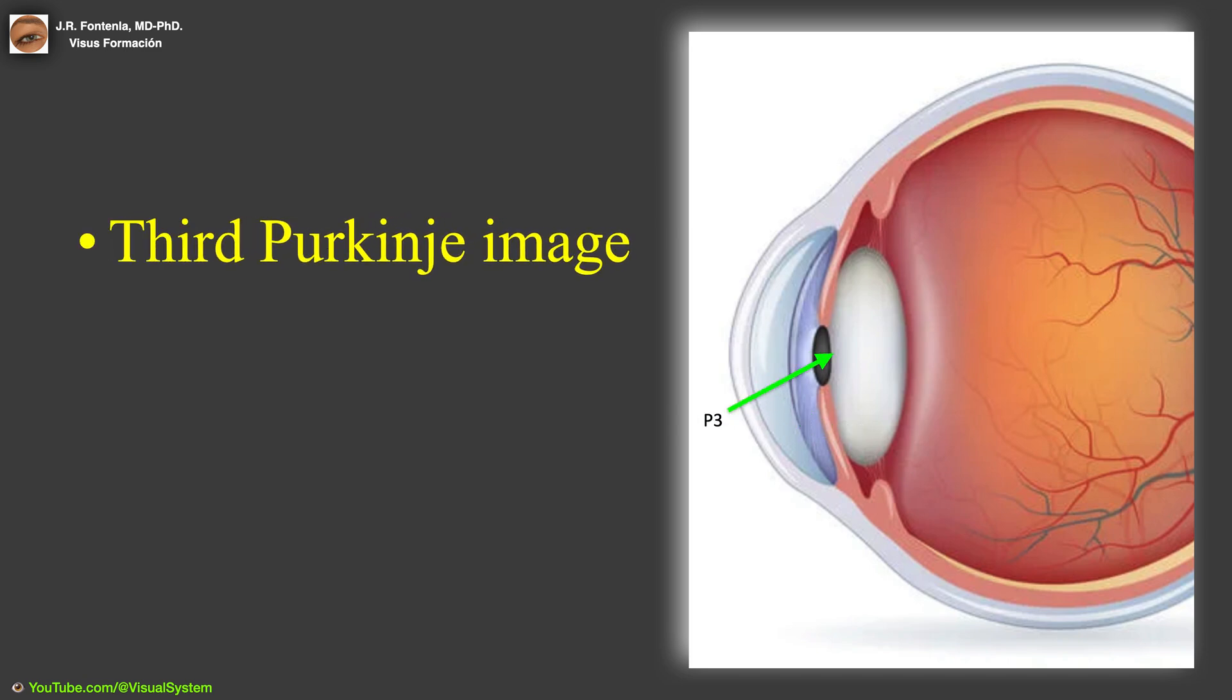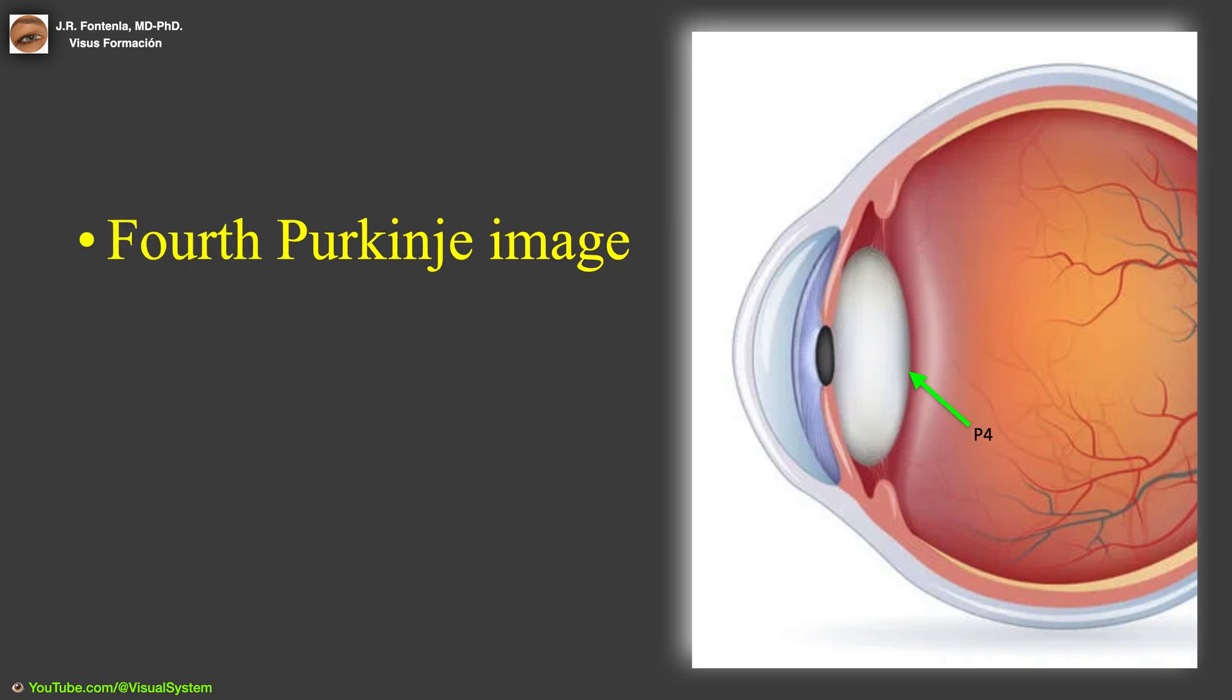The third image is the reflection from the outer surface of the lens. And the fourth Purkinje image is the reflection from the inner surface of the lens and is also referred to as the lens posterior reflection.